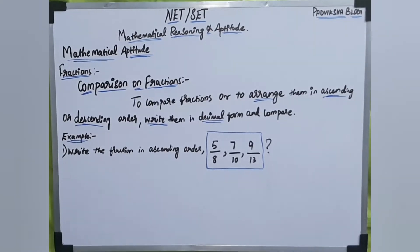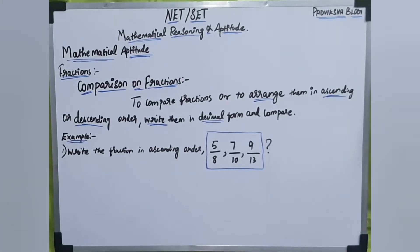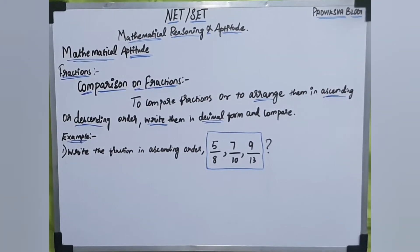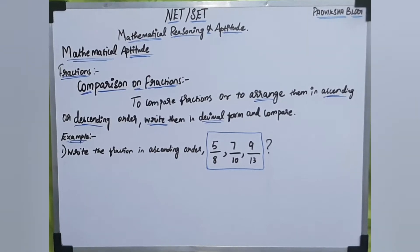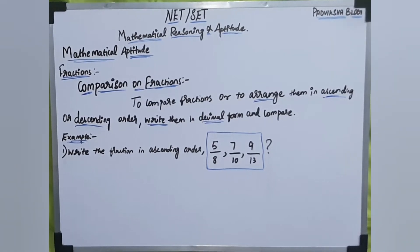As we get into comparison of fractions, let us see what it means. To compare fractions or to arrange them in ascending or descending order, write them in decimal form and compare. We have to write the decimal form for each and every fraction and then compare them.